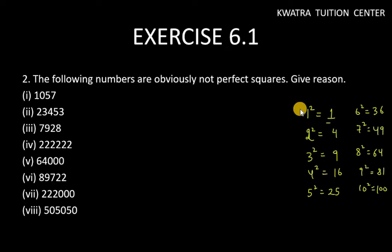what conclusion is that our square ending digits are either 1, or 4, or 9, or 6, or 5, or 0. Perfect squares can only end with these digits: 1, 4, 9, 6, 5, 0.